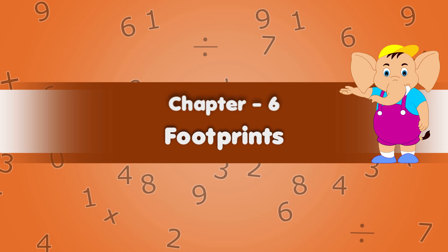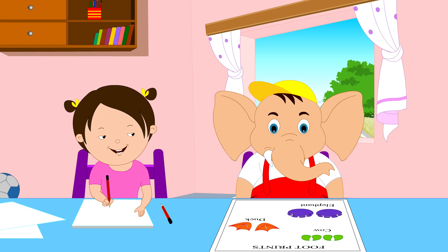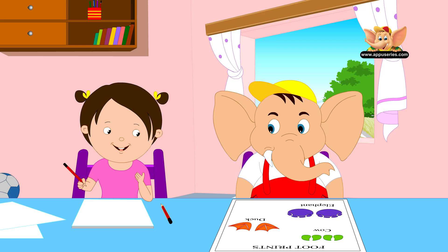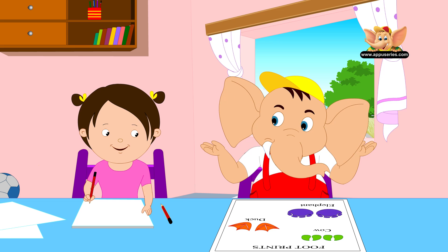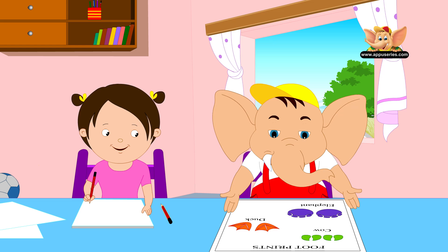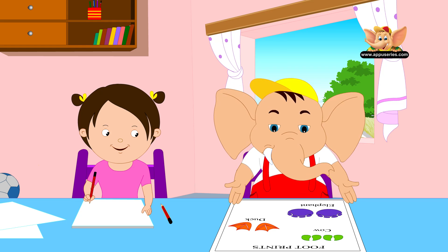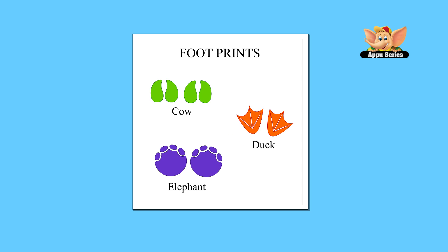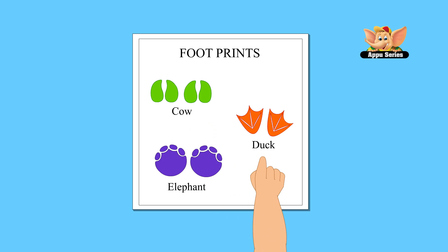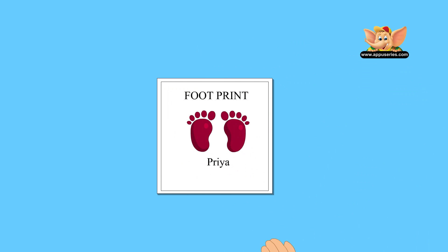Chapter 6: Footprints. Hey, Appu! What are all these marks? These are footprints of different animals. Let's see whose footprints these are. These are footprints of a cow, a duck, an elephant, and this is how yours look, right?